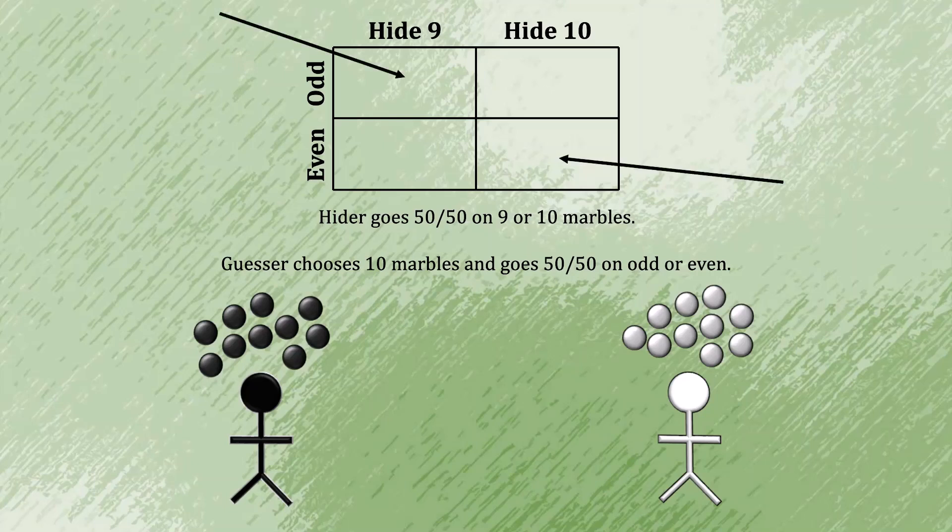These two, where the guesser chooses odd and the hider chooses 9, or the guesser chooses even and the hider chooses 10, are straightforward to think through. The guesser has chosen correctly, and because they have put 10 marbles in their hand, the hider must give the guesser all of their marbles. Consequently, the hider loses the entire game, and there's not going to be a second round.